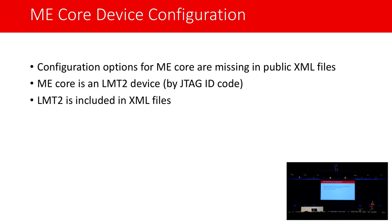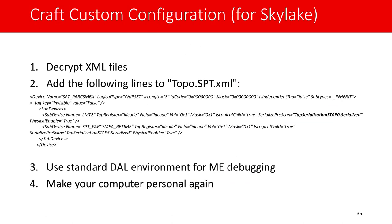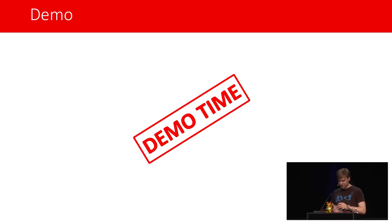Jeder kann aufgrund der öffentlichen XML-Files Konfigurations-Files für die Management Engine schreiben. Hier sieht man die interne Struktur der Kerne. Die CL-Tab ist in vier Teile gespalten. Um seine eigene Konfiguration zu erstellen, gibt es vier Schritte: Als erstes muss man die XML-Files entschlüsseln. Als zweites muss man ans Topo SPT die folgenden Zeilen anhängen. Man muss das Standard-DAL-Debugging-Setup für die Management Engine machen.